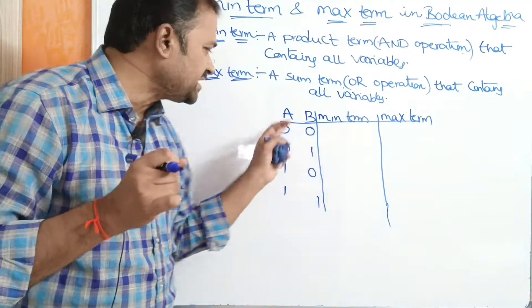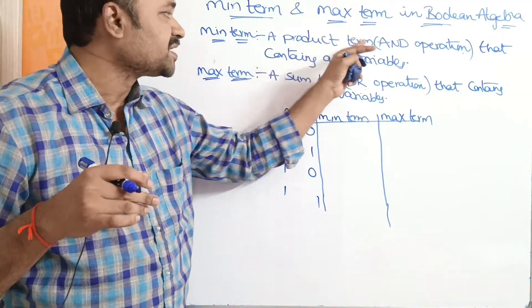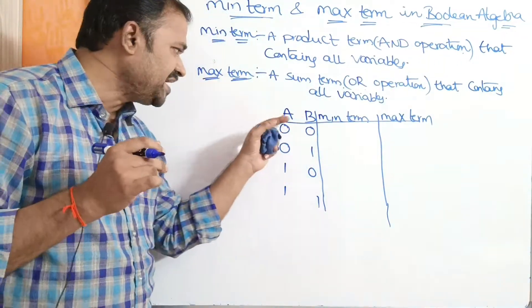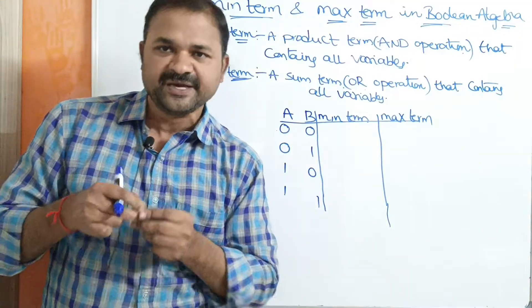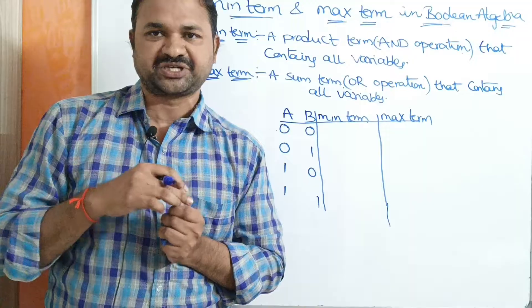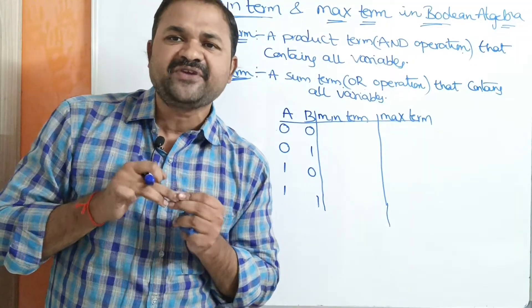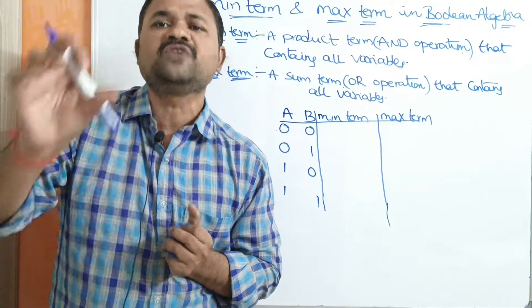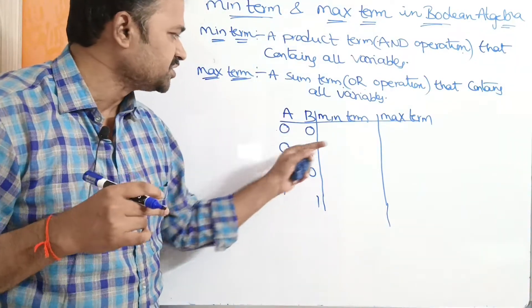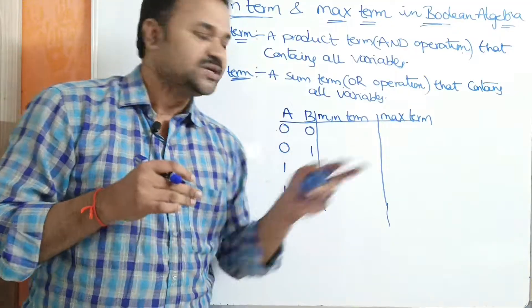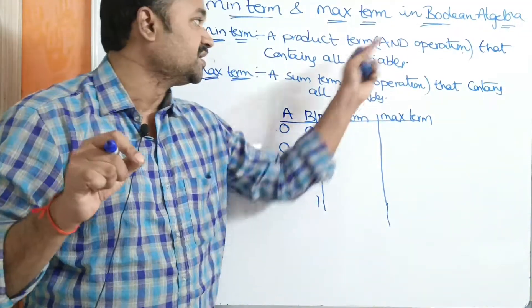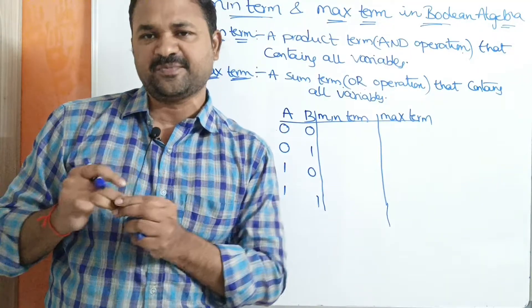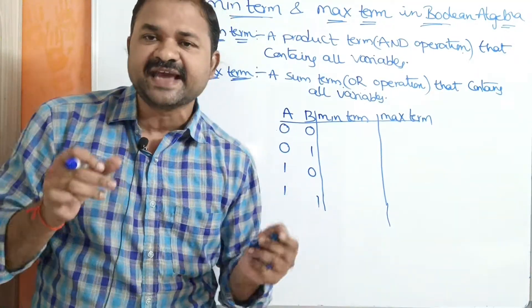Now we have to write the minterm for all four combinations. A minterm is a product term under AND operation that contains all the variables. Here we have two variables A and B, so the minterm should contain both variables. In a minterm, 0 is taken as the complement of that variable, whereas 1 is considered as that variable itself.